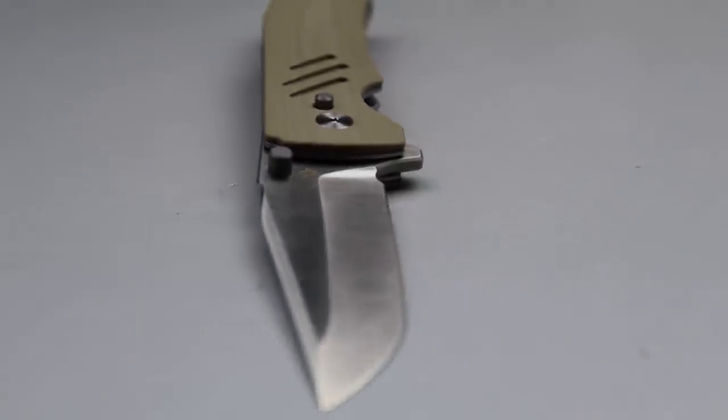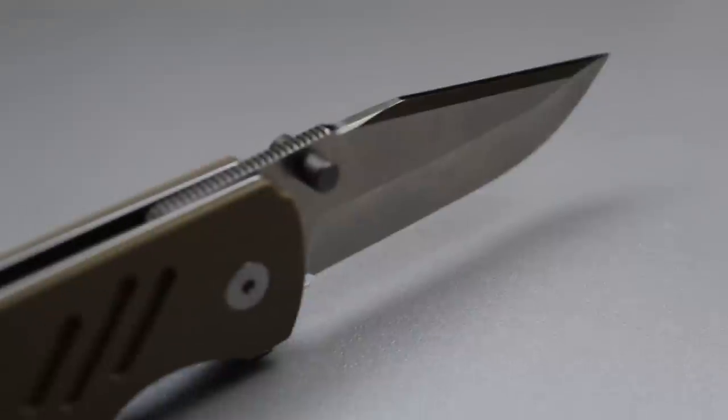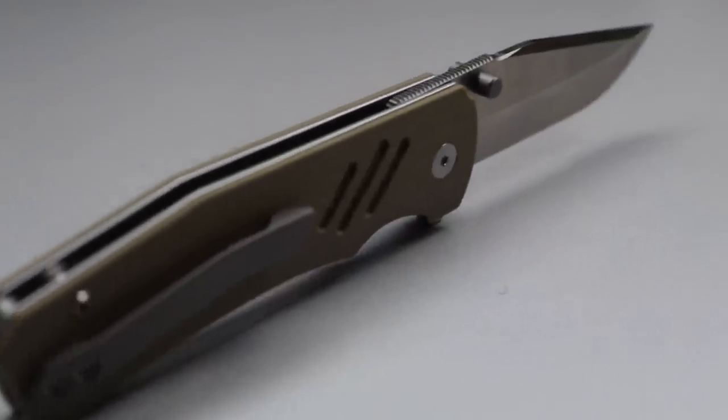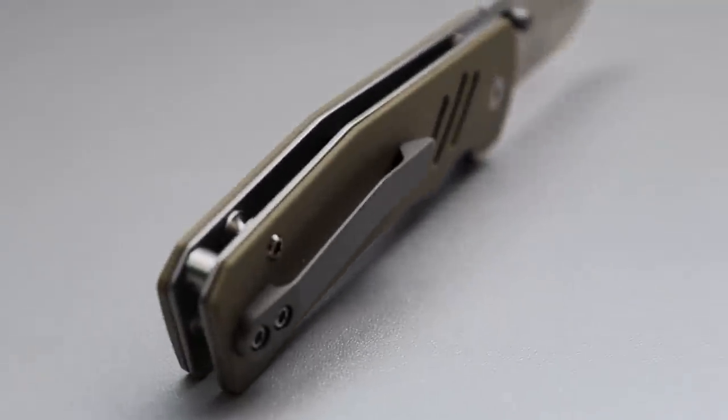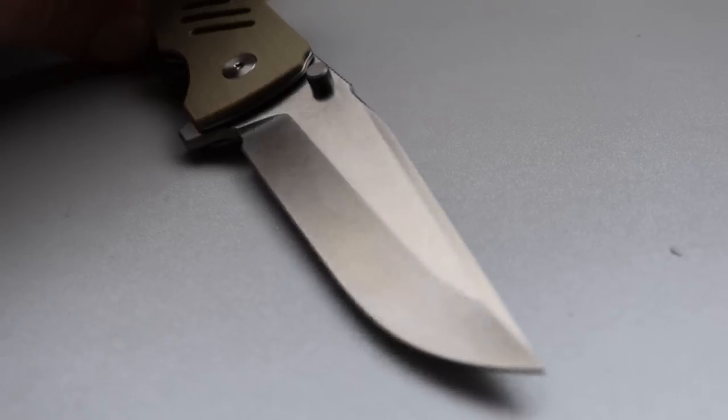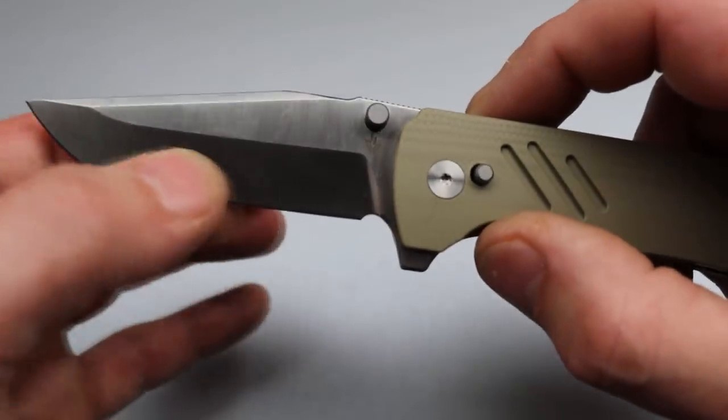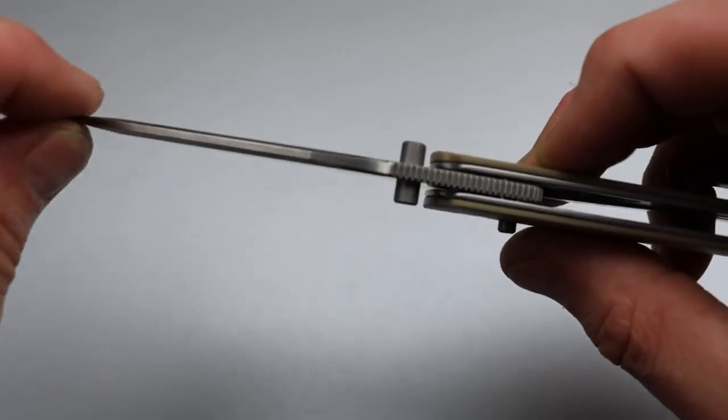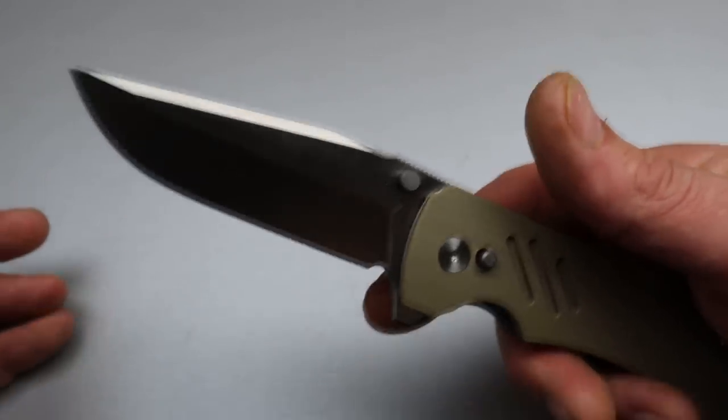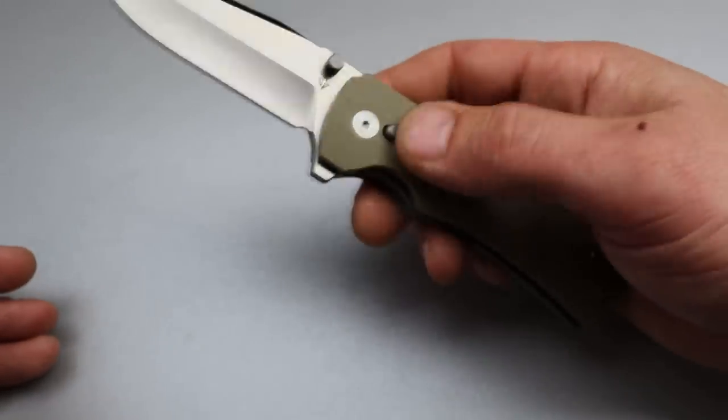Now, this also comes with a sheep's foot blade version. This one is the clip point or drop point blade with a beautiful satin finished hollow ground blade, nice and thin behind the edge, but it has somewhat of a robust blade. So it's going to be kind of the best of both worlds where it's robust and slicey at the same time. 20CV blade steel.